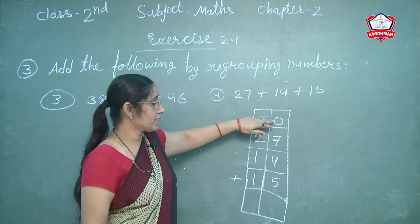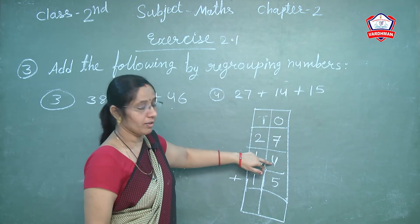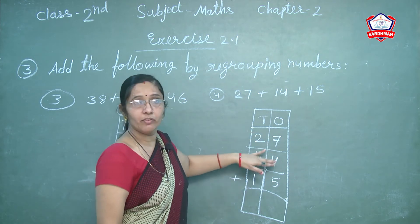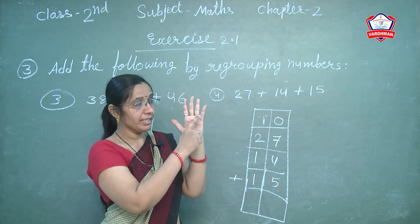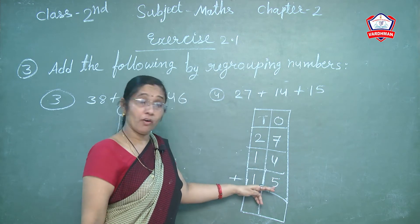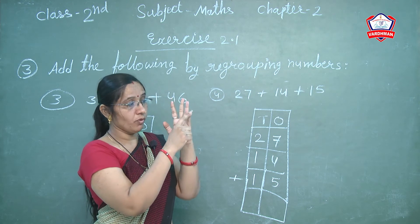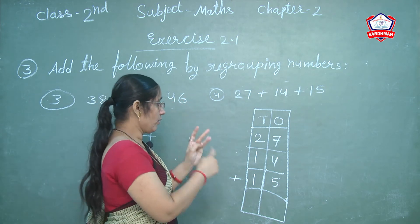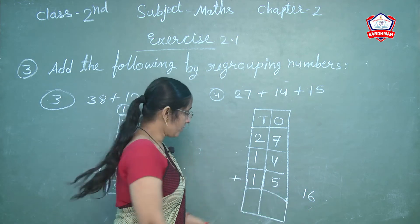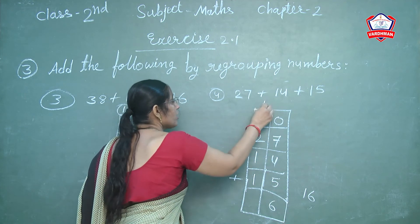Write the plus symbol. Now first start the ones column. Ones first digit is 7, next is 4, next is 5. Count 4 ahead of 7: 7, 8, 9, 10, 11. Then count 5 more ahead of 11: 11, 12, 13, 14, 15, 16. Answer is 16. 16 means 6 is ones — write 6 in ones column. 1 is carry — carry forward to tens column.